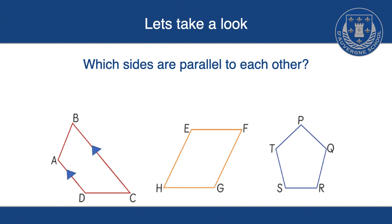So we've got here, we've got two parallel lines. So we can say that line A and D is parallel to B and C. And again, I've used the arrow. If we move on, I can say that line E and F is parallel to line H and G. I can also say that line F and G is parallel to line E and H.